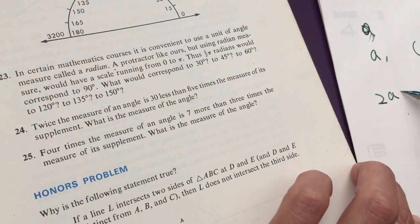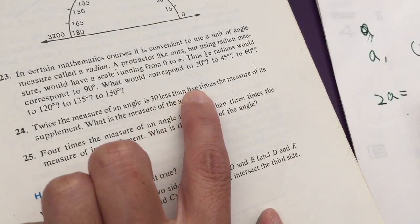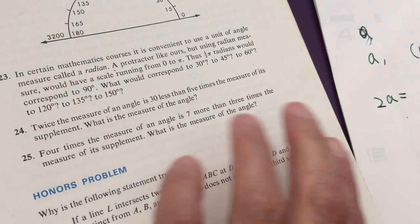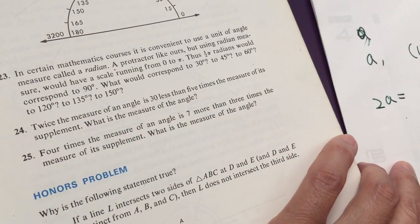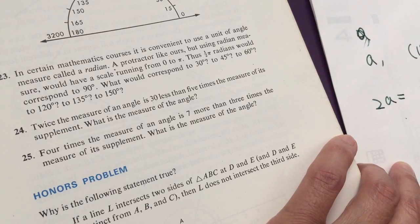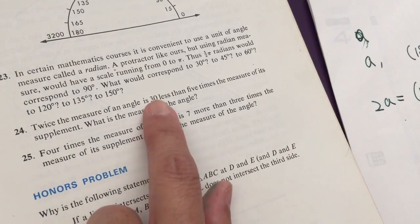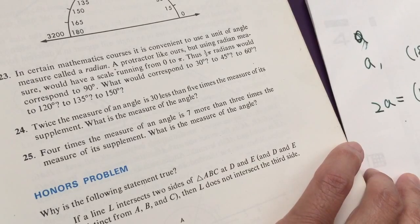So is 30 less than 5 times the measure of its supplement. So the measure of its supplement is 180 minus A, and 5 times of such, right?